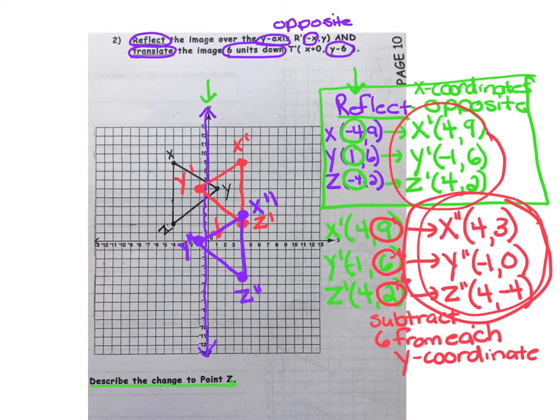As we slide our image down 6 units, we once again get a bit of overlap. But that's okay. Our final image is here in purple.